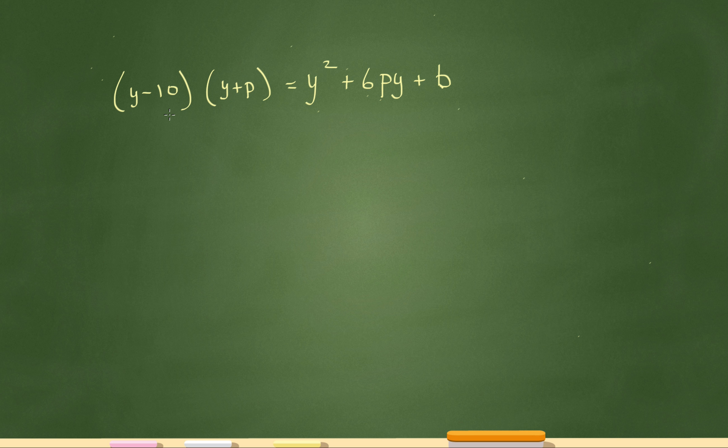Remember, foiling is first, outer, inner, last. So here's my first, so that'll be y squared. Outer will be py, inner will be negative 10y, and last will be negative 10p. And that will equal y squared plus 6py plus b.